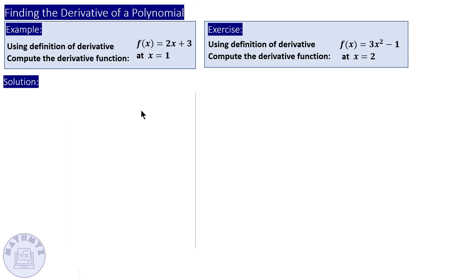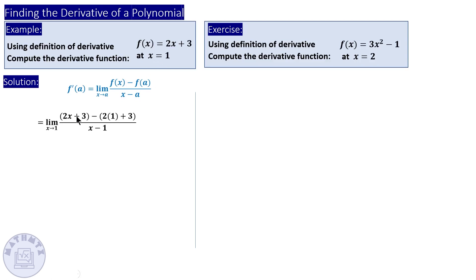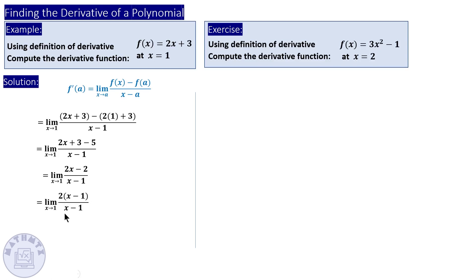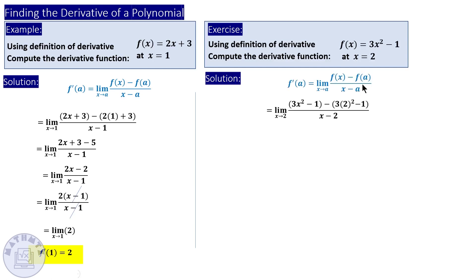Now let's do it using the definition with the alternative formula: the limit when x approaches a of [f(x) minus f(a)] over (x minus a). Substitute a equals one. Distributing the negative sign gives 2x plus 3 minus 5, which simplifies to (2x minus 2) over (x minus 1). Take 2 as a common factor and cancel the factor with the denominator — the derivative is two. For the second one, substitute f(x) minus f(2) and simplify.